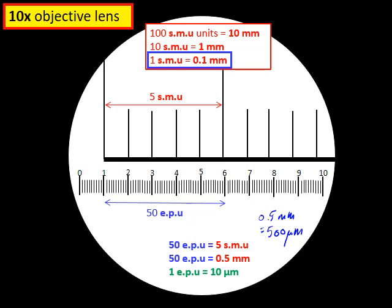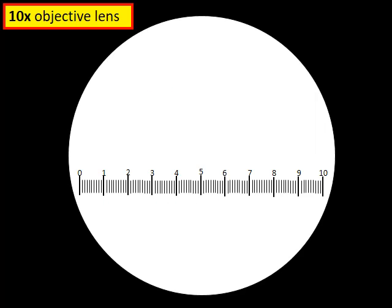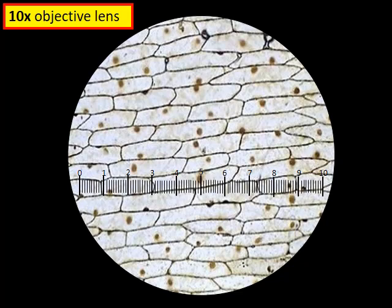This value of 10 micrometers per eyepiece unit is two and a half times less than the 25 micrometers calibrated for the four times objective lens, which makes sense. We remove the stage micrometer from beneath the ten times objective and place the same onion cell slide back on the stage. The cells now appear two and a half times more magnified than before.